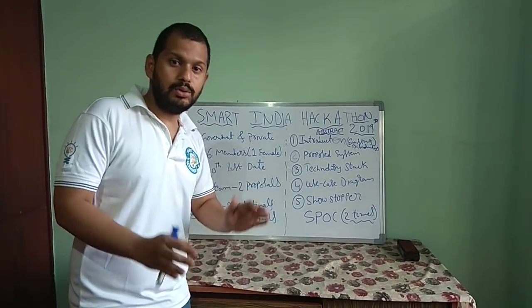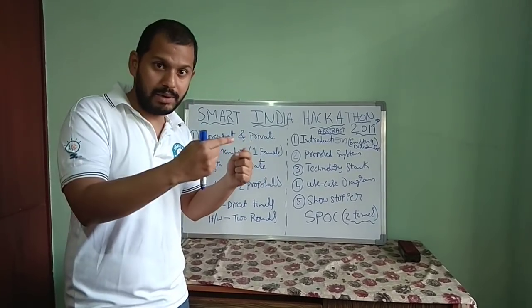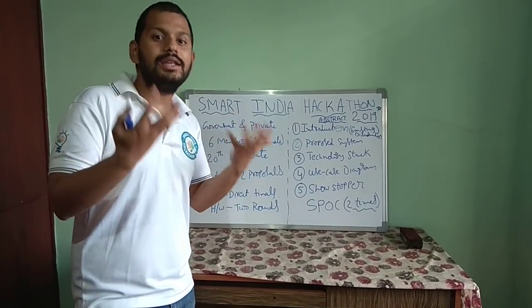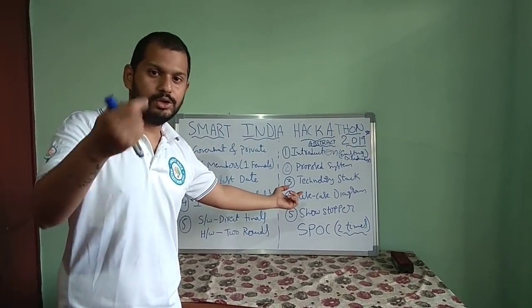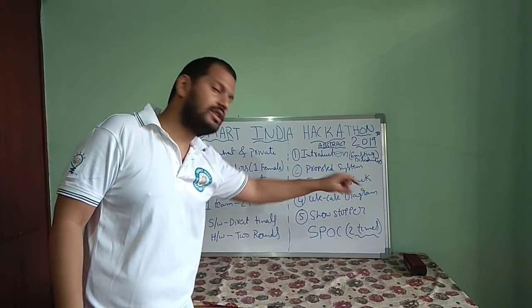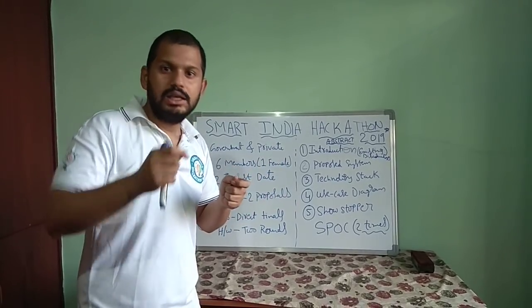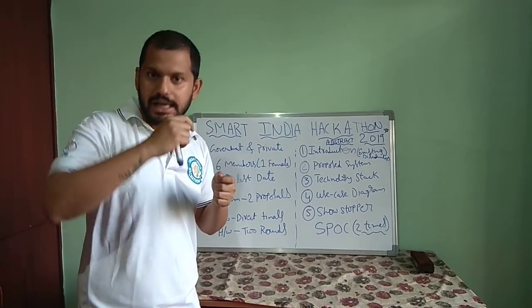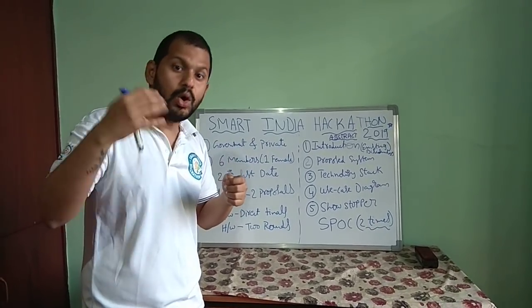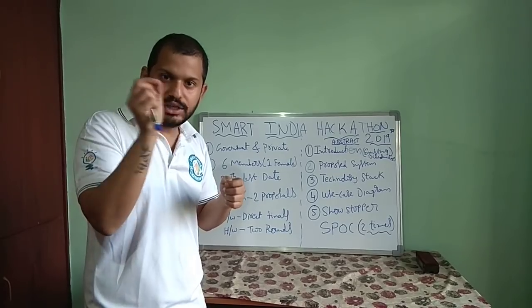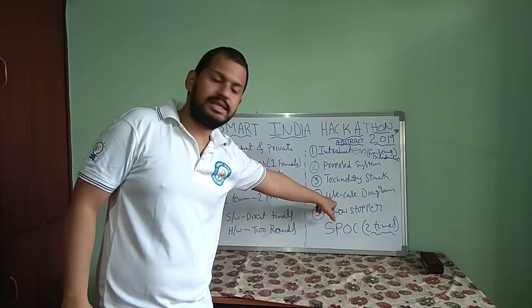Next is the use case diagram. You have proposed a model that solves the problem — now who are the users? That is what the use case diagram represents. You can Google how a use case diagram looks. The basic purpose is to show who will be using your proposed model — for example, citizens, the government, or the municipality. You need to mention all users and give a one-line explanation about each one.